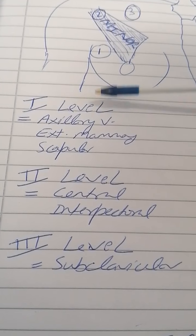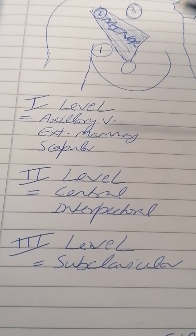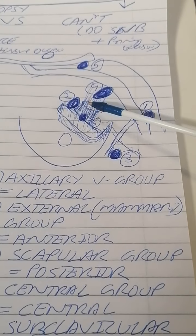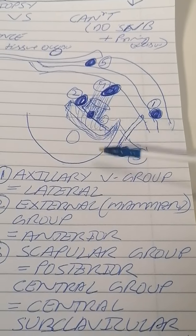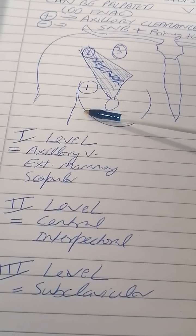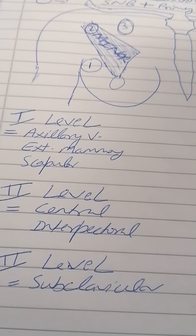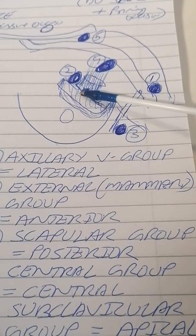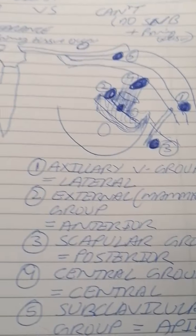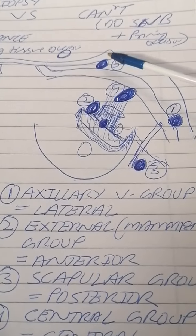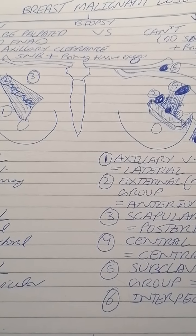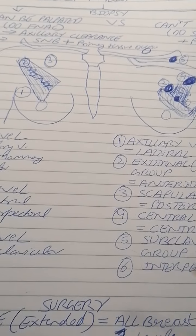Level one consists of the axillary vein group, external mammary group, and scapular group — all lateral and inferior to the pectoralis minor. Level two consists of the central group and the interpectoral group, which are deep to the pectoralis minor. Level three consists of the subclavicular or apical group, which is medial to the pectoralis minor. These levels are essential for understanding surgical dissection.